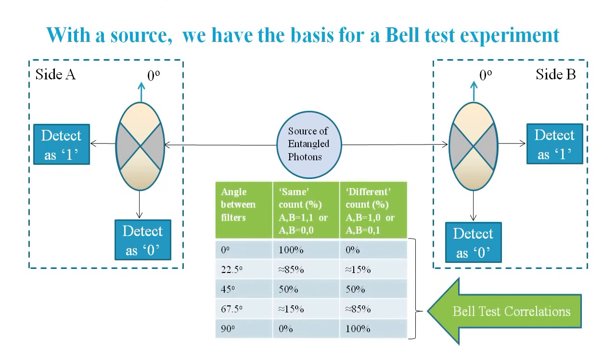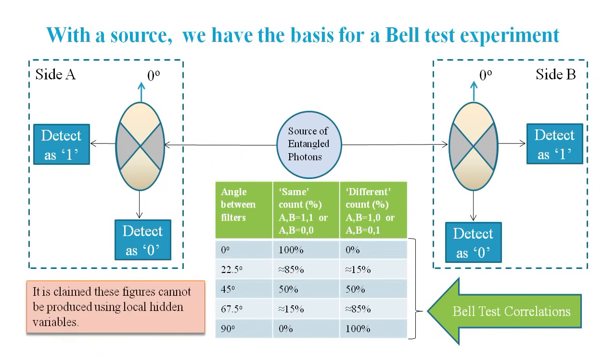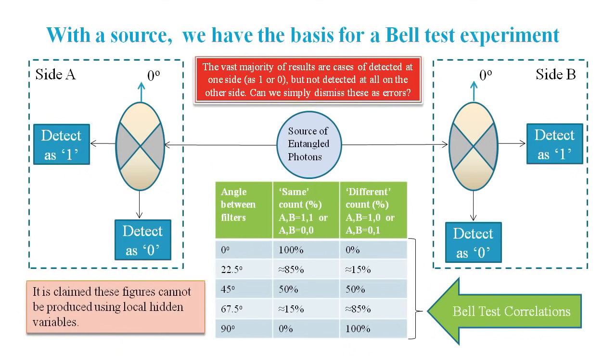Here's a table that shows a set of Bell test correlations. Note that the important thing is whether or not the detections are the same at both sides or different. This table shows what quantum mechanics predicts. You're not supposed to be able to reproduce these figures using local hidden variables. But this table of quantum mechanics predictions says nothing about how many cases of one-sided detections we should expect. And in real experiments, these counts are the biggest, most significant counts of all.